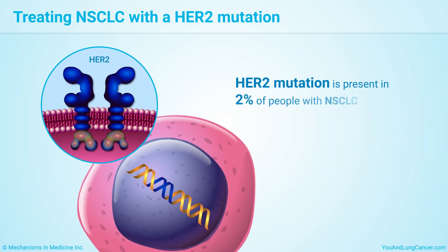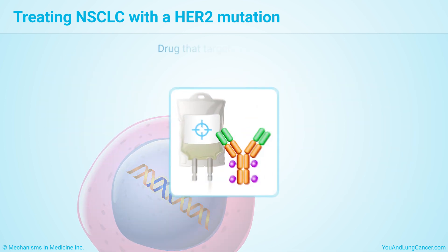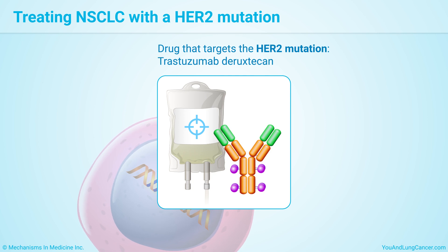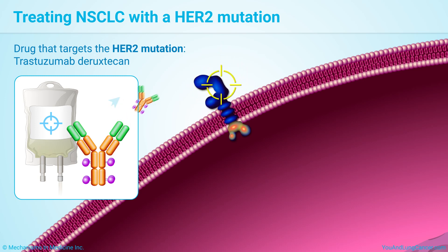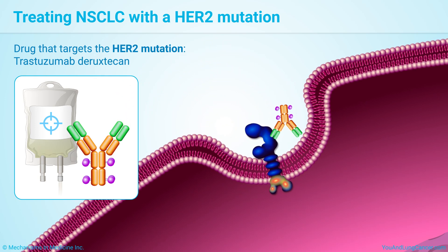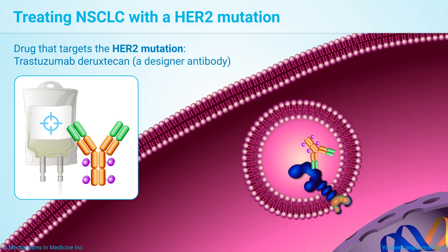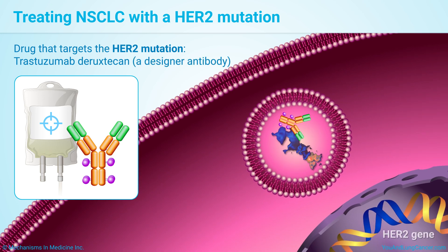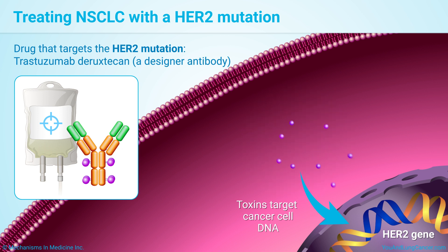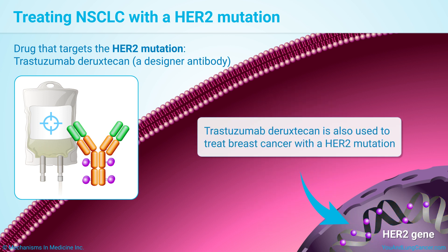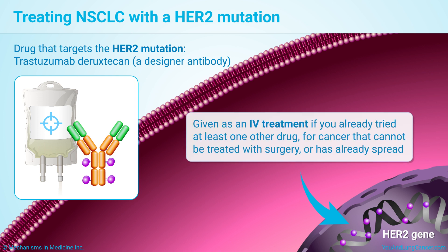2% of people with non-small cell lung cancer have mutations in a gene called HER2. A drug called trastuzumab-duruxtican is approved to treat lung cancer with a HER2 mutation. Unlike some of the other targeted therapies, it is not a tyrosine kinase inhibitor but a designer antibody — an antibody with a toxin attached to kill the targeted cancer cell. This drug is also used to treat breast cancer that has the HER2 protein. It is given as an IV treatment if you have already tried at least one other drug for cancer that cannot be treated with surgery or has already spread.